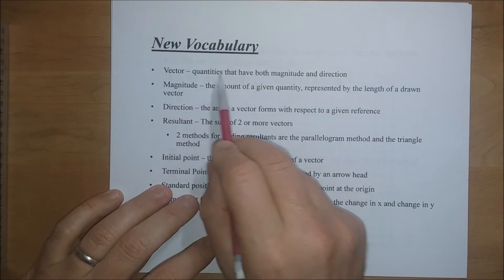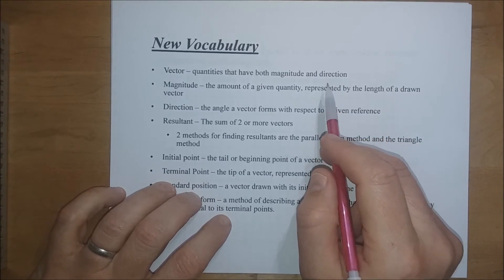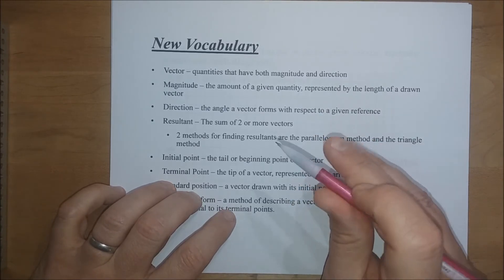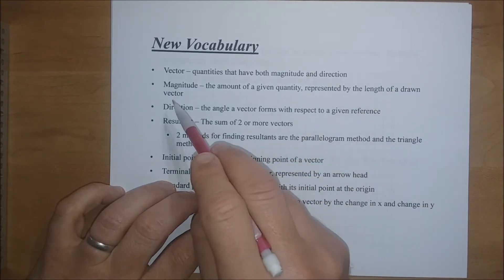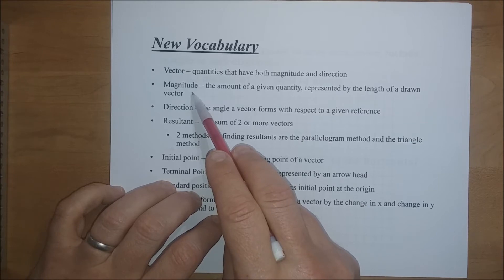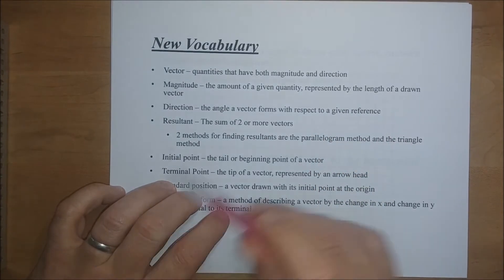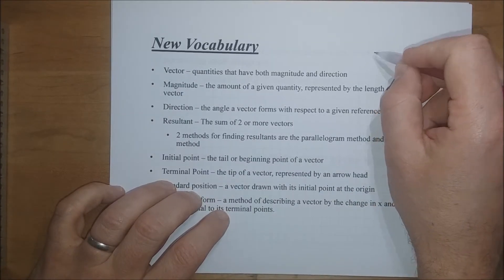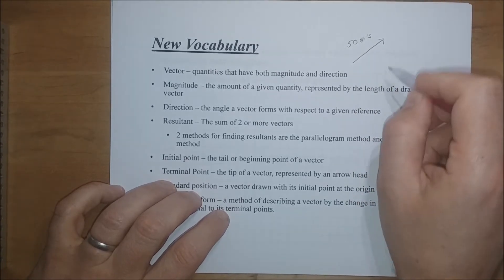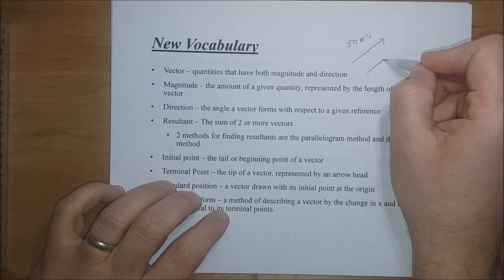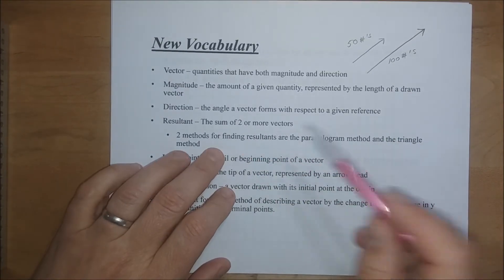What is a vector? A vector is a quantity that has both magnitude and direction. For instance, if I said 50 pounds, that's just a scalar quantity — it just has magnitude. But if I said I was pushing with 50 pounds in a northeasterly direction, now all of a sudden we have a vector. The magnitude is the amount of the given quantity, in that case 50 pounds, and we represent magnitude by the length of the drawn vector. We draw vectors as arrows.